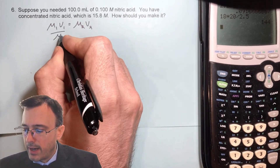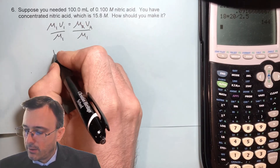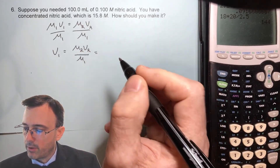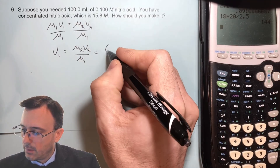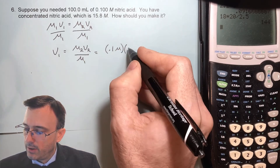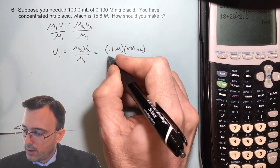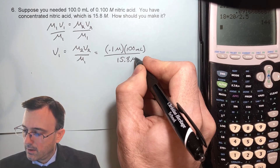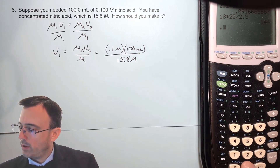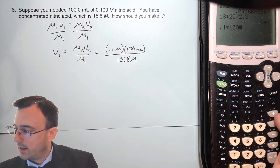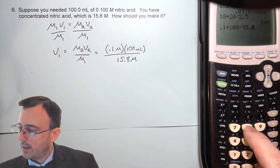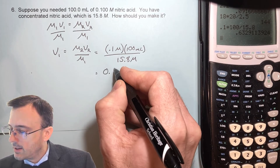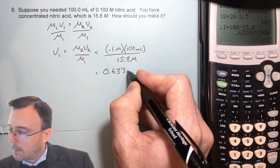That gives us V1 equals M2V2 over M1. Plugging in numbers: our final molarity is 0.1 molar, our final volume is 100 milliliters, and our initial molarity is 15.8. That gives us 0.1 times 100 divided by 15.8, which results in 0.633 milliliters — a number less than 1.